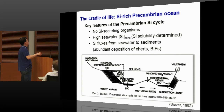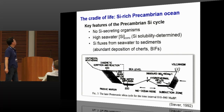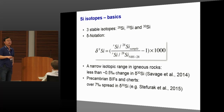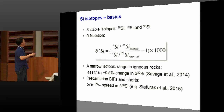Life actually started in this silica-rich environment, so it's quite important to understand the silica cycle during that time. Silicon isotope is a potential proxy for the silica cycle. Silicon has three stable isotopes: 28, 29, and 30, and silicon isotope is expressed by the traditional delta notation in per mil.